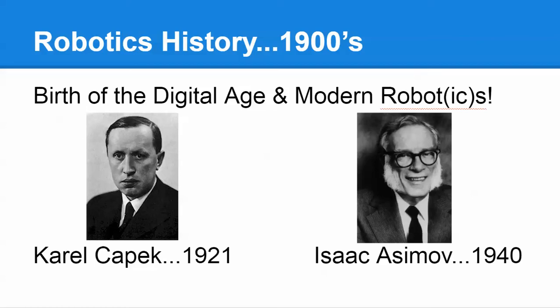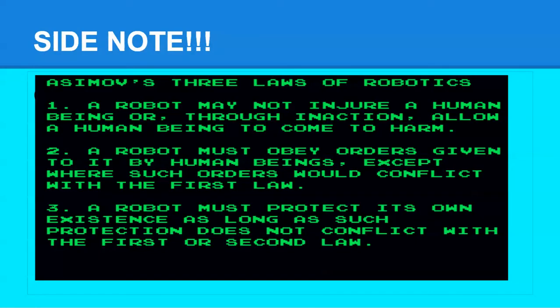As a side note, the Three Laws of Robotics will be utilized throughout this coursework. The first law: a robot may not injure a human being, or through inaction allow a human being to come to harm. The second law: a robot must obey orders given to it by human beings, except when such orders would conflict with the first law. The third law: a robot must protect its own existence, as long as such protection does not conflict with laws one and two.